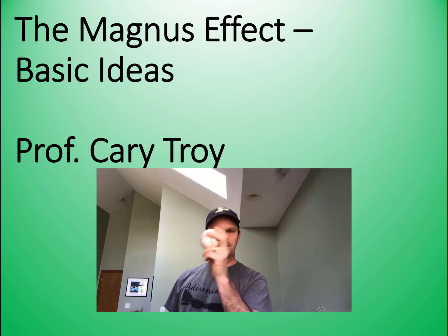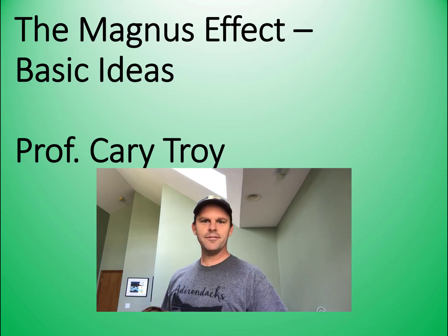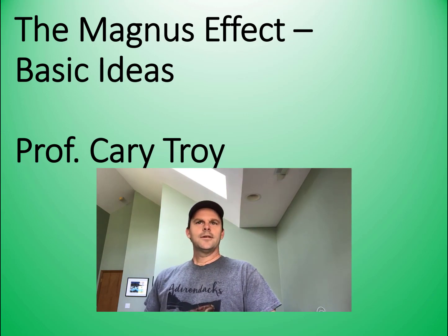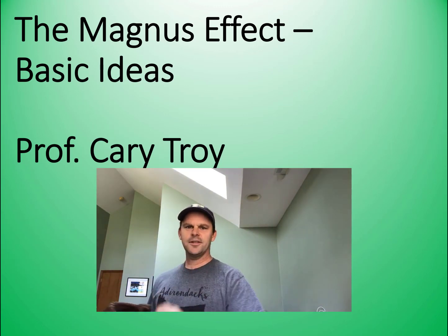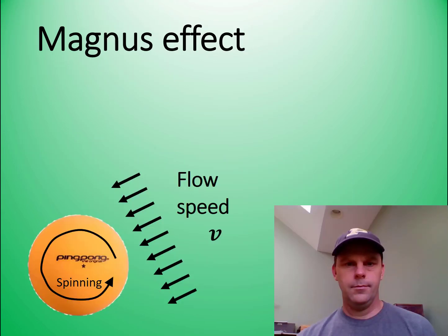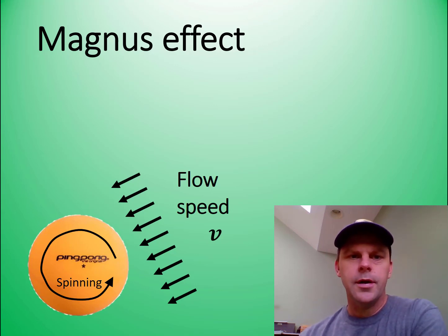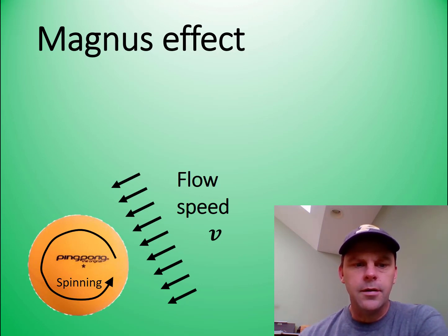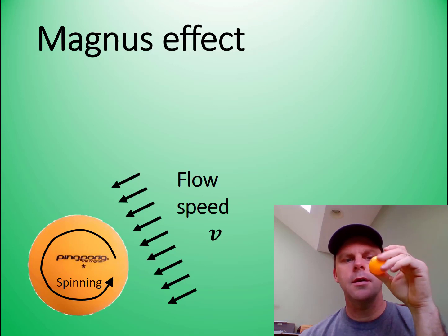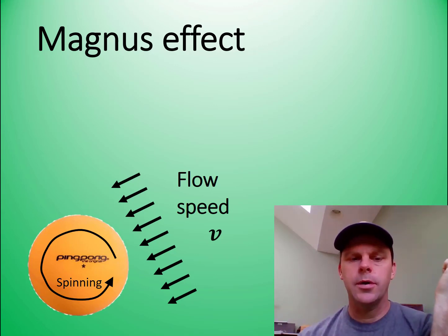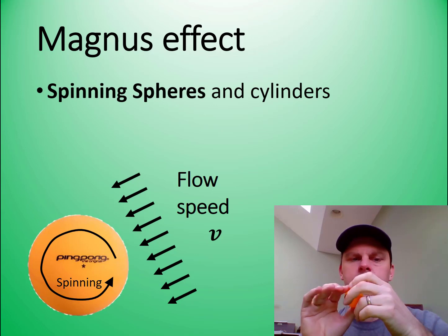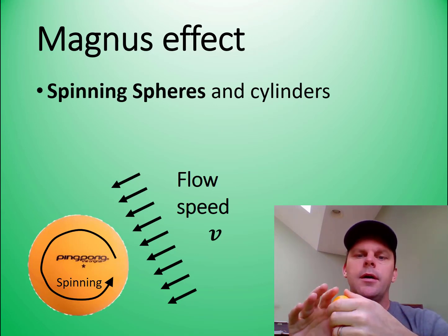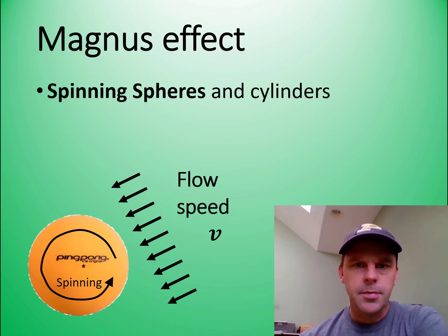Okay, so you ever wonder why a ball dips when you give it a little spin when you throw it? We're going to learn about that. Very quick overview of the Magnus effect: this is the effect where you get lift when you have a rotating sphere, cylinder, or object. We're going to be treating primarily spinning spheres as opposed to cylinders, which have also been pretty well studied.